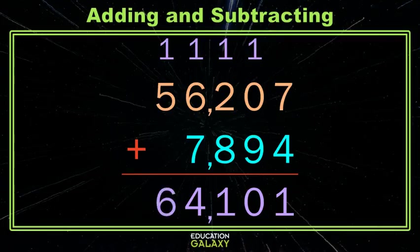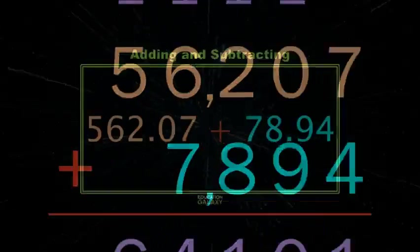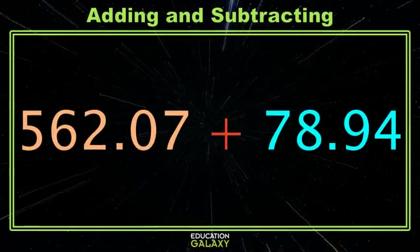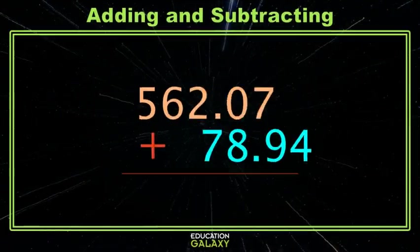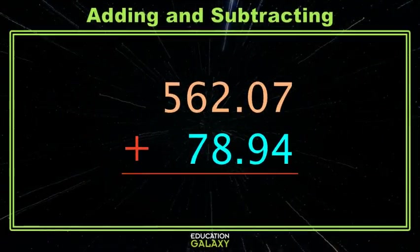Now, what if I have numbers that look kind of like this, but they have a decimal? Does that change things? Well, it doesn't change the fact that we need to line our numbers up by place value. And now we can add as we usually do.